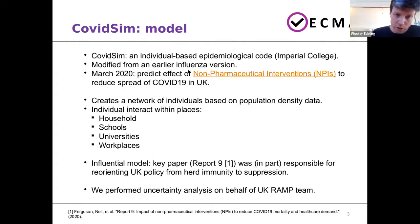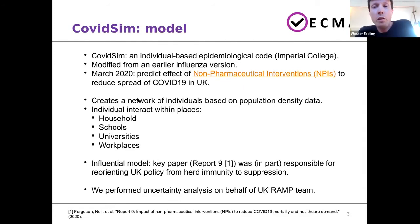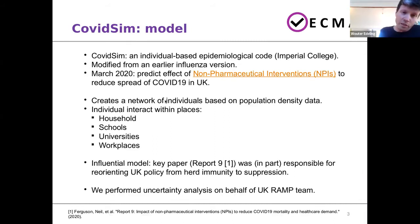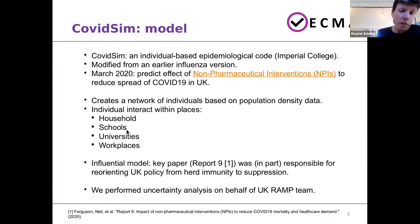Back in March of 2020, it was used to predict the effect of NPIs — non-pharmaceutical interventions. You have to think of things like social distancing, closing schools, stuff like that. The model creates a network of individuals that's actually based on UK population density data. Within this network, individuals can interact and infect each other in four different place types: households, schools, universities, and places of work.